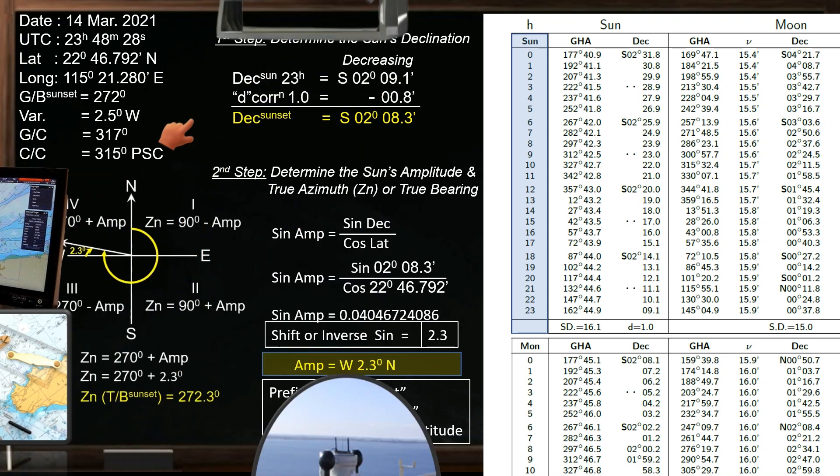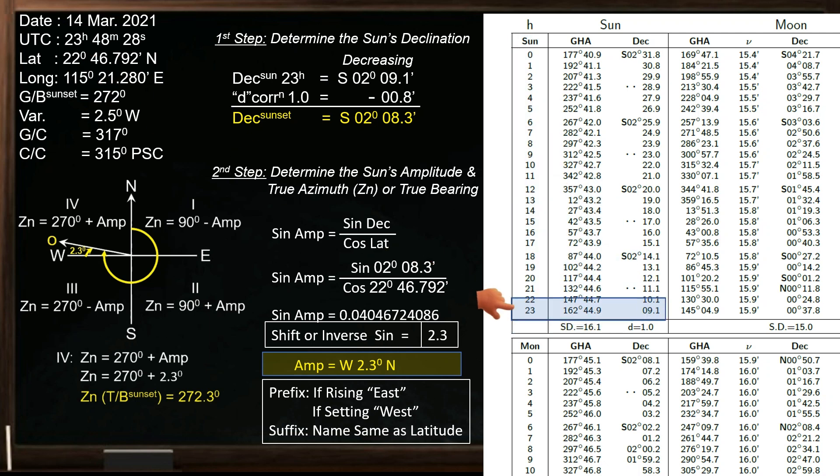The declination of the sun at 2-3 hours UTC is 2 degrees, 9.1 minutes south. This is the sun's declination at 2-3 hours UTC. For the D correction, we can find it below, or at the bottom of the daily page. The D correction is 1.0.